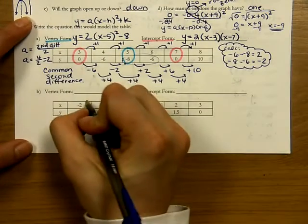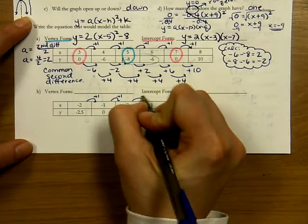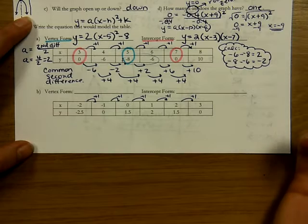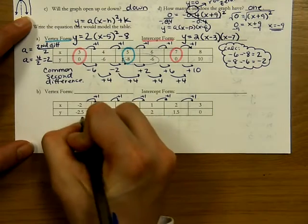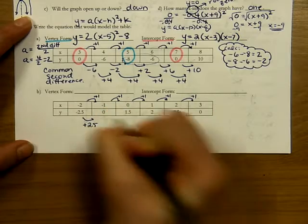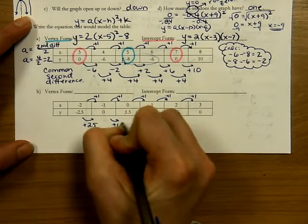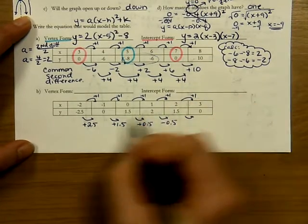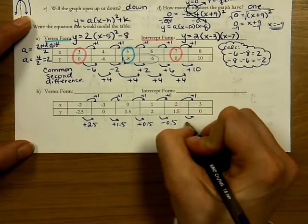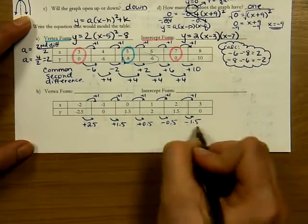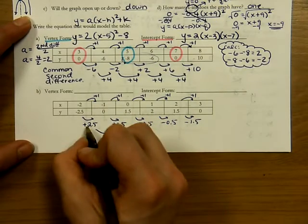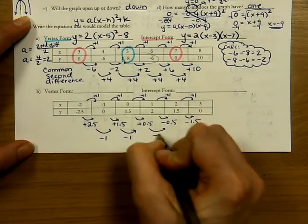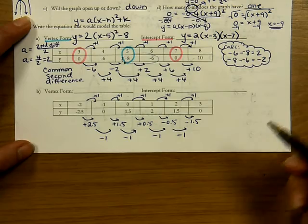For the next table, I always check the pattern first. The first differences are 2.5, 1.5, 0.5, negative 0.5, negative 1.5 — changing from increasing to decreasing, and the second differences are all negative 1. A constant second difference again confirms it's quadratic.